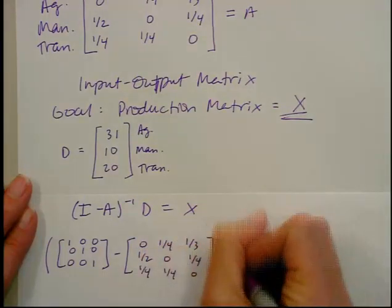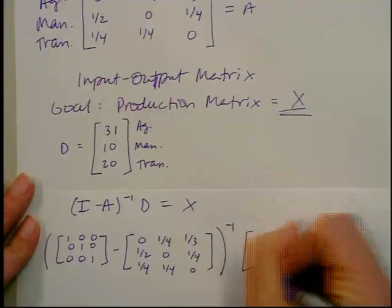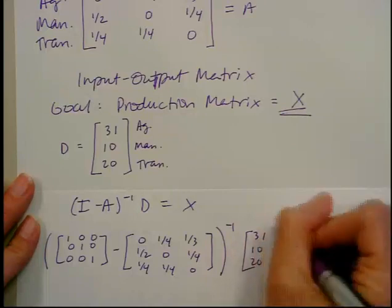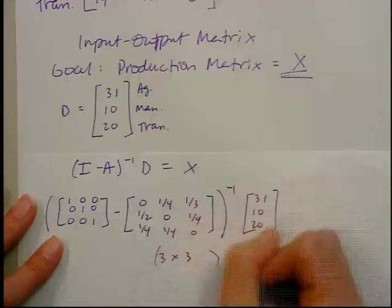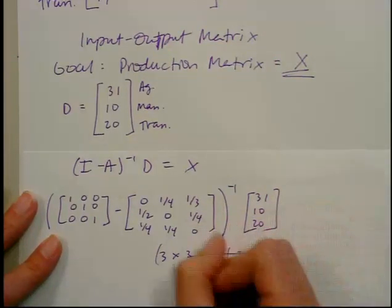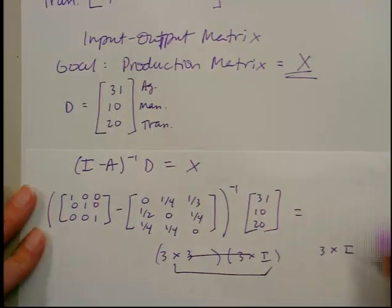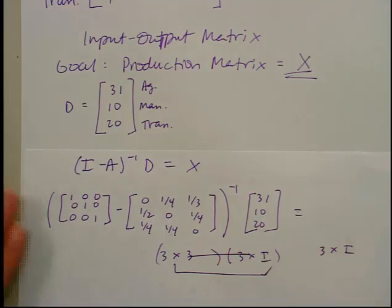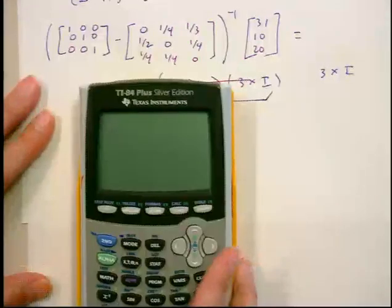The input-output matrix entries are: one-half, zero, one-fourth; one-fourth, one-fourth, one-fourth; zero — and I want to take the inverse of that resulting matrix, then multiply it by matrix D. This three by three matrix times the three by one demand matrix will give a three by one production matrix representing how much of each commodity needs to be produced in total.